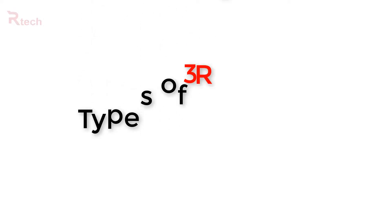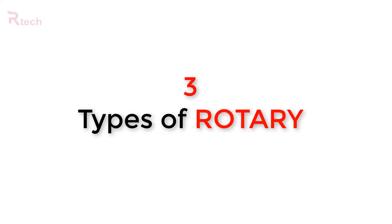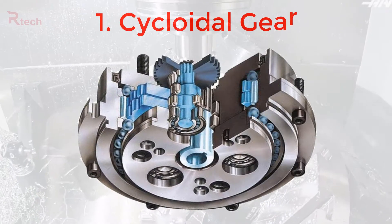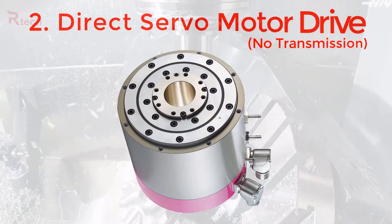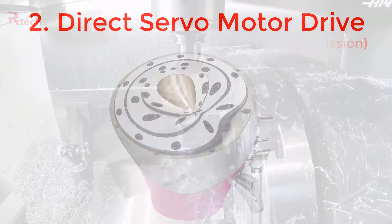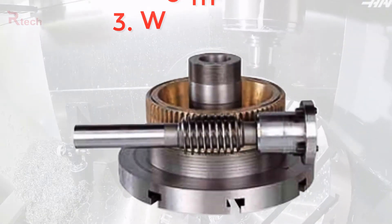There are three main types of rotary transmission: cycloidal gears, direct servo motor drives, and worm gears.